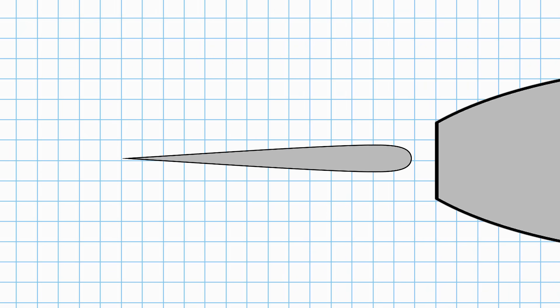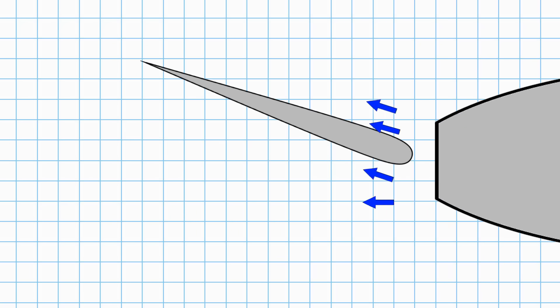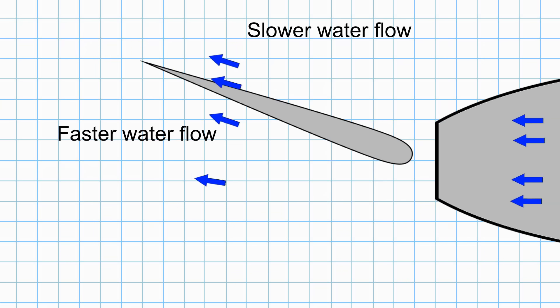Again, when the rudder is amidships, there's no deflection in water flow, so the boat remains in a straight line. If we turn the rudder again, the water is going to be deflected off to one side. This time, however, the shape of the rudder forces the water to run over a curved path. The water on this side now has to flow faster to flow around the rudder. The water on the other side conversely has to flow slightly slower.